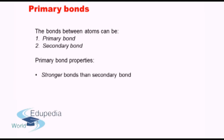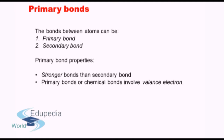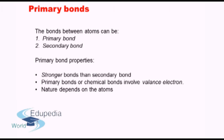Primary bonds are stronger bonds than secondary bonds — that is a very characteristic property of primary bonds and a key point of difference with secondary bonds. Primary bonds, also known as chemical bonds, involve the valence electrons. The valence electrons of the atoms come into picture when we discuss about primary bonds. The nature of the bond depends on the type of atom, meaning primary bonds are not just a single type — there are multiple types, and what kind will be formed depends on the nature of both atoms.